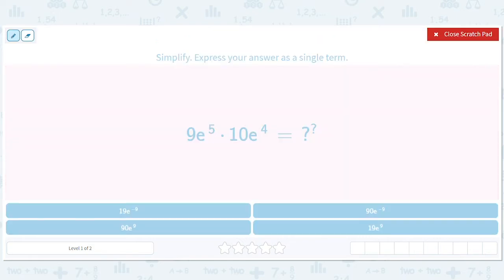So over here, we have an e to the fifth and an e to the fourth. So we're going to combine those. We have a nine and a 10. And we're going to combine those. So the nine times 10 is going to be 90. And the e to the fifth times e to the fourth, we add the exponents. So we have e to the five plus four. So we're going to end up with 90e to the ninth.